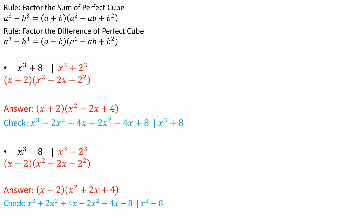Now for the second problem: x cubed minus 8. We rewrite it as x cubed minus 2 cubed. Using the difference of perfect cubes formula, we get (x - 2)(x² + 2x + 2²), which simplifies to (x - 2)(x² + 2x + 4).